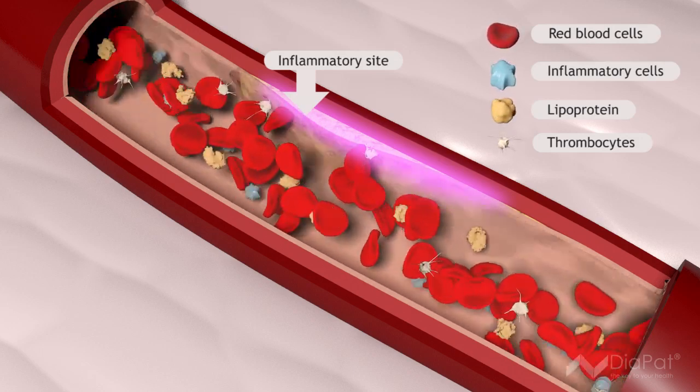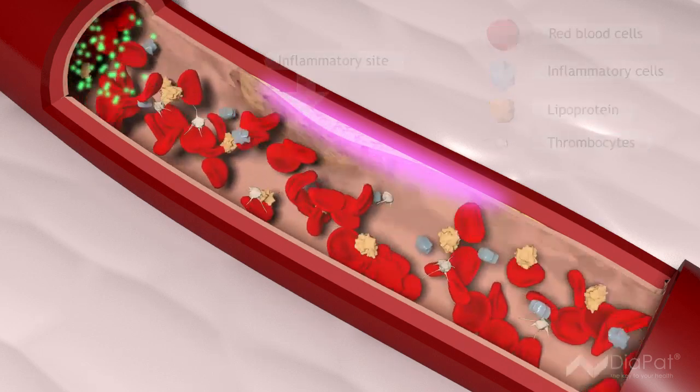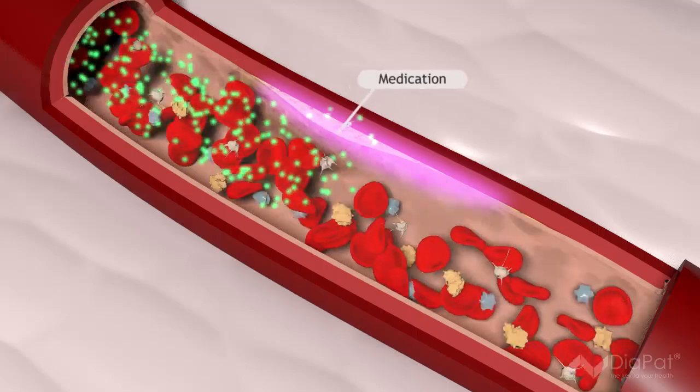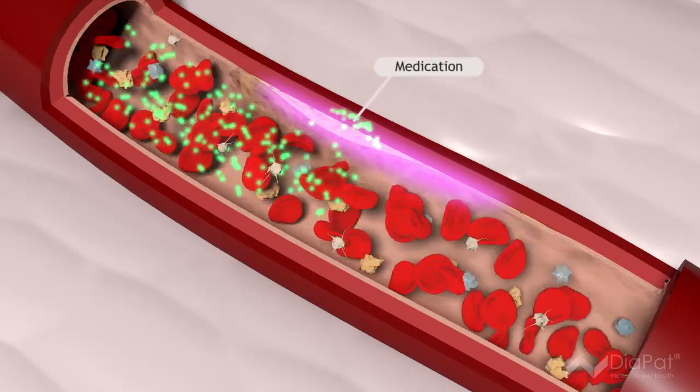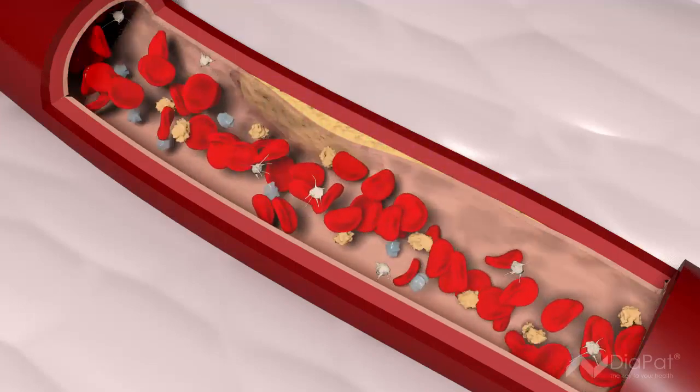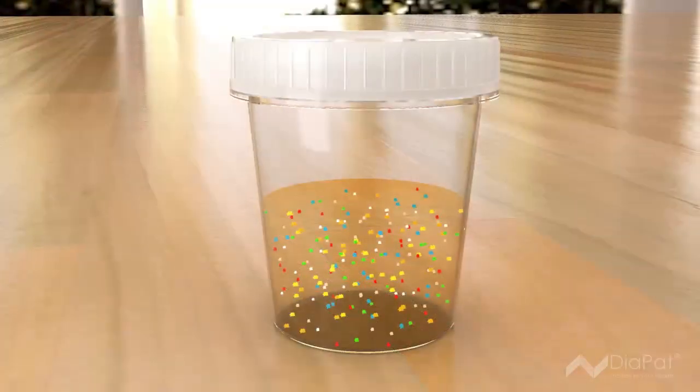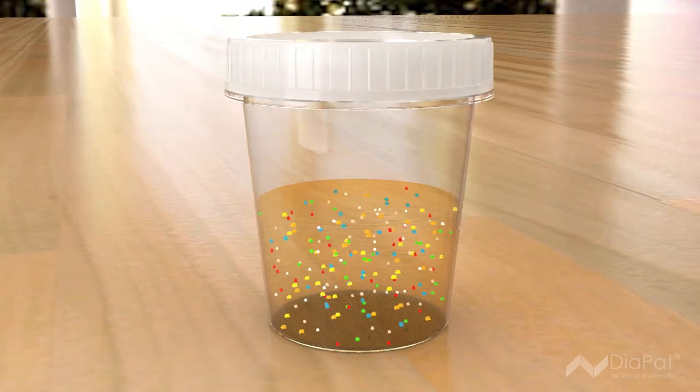urinary proteome analysis is the only diagnostic method enabling the timely identification of those plaques. At this early stage, drug therapy and lifestyle changes can significantly reduce the risk of a heart attack or stroke.